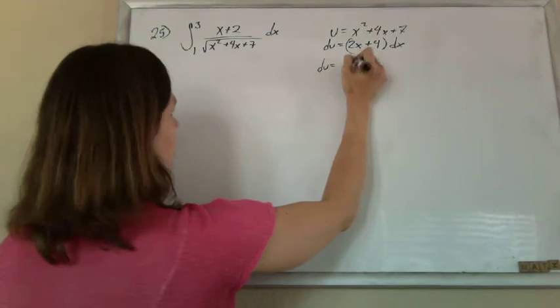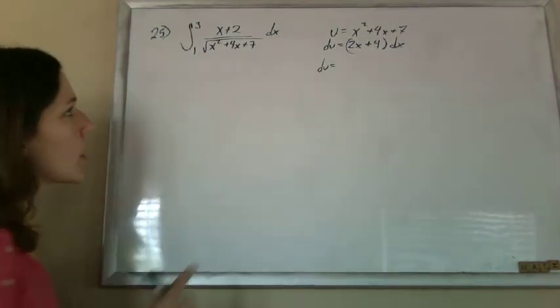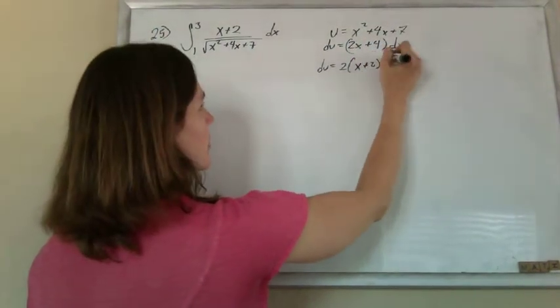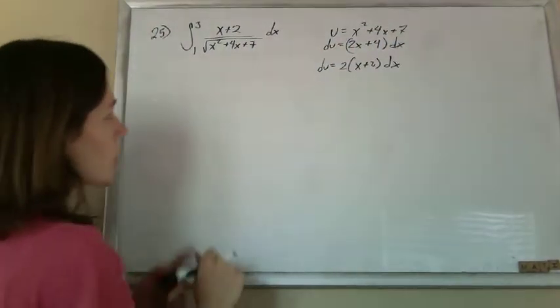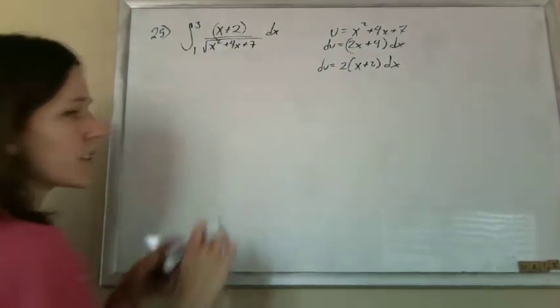But if we factor out, actually if I factor out a 2 from this, I get 2 times x plus 2 dx. So I see the x plus 2 dx there, I just don't see the 2.